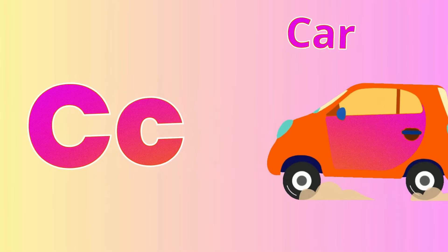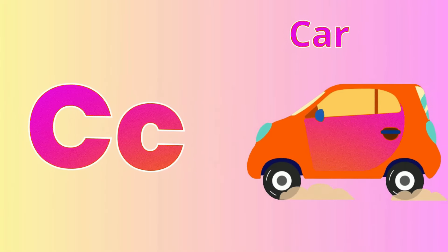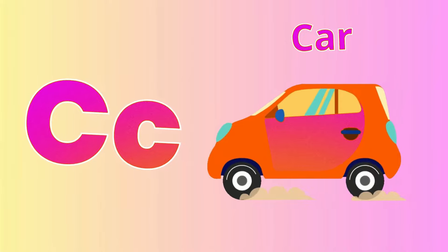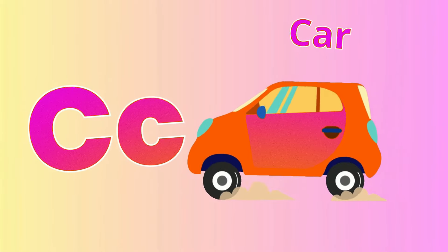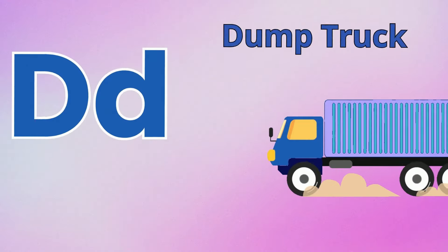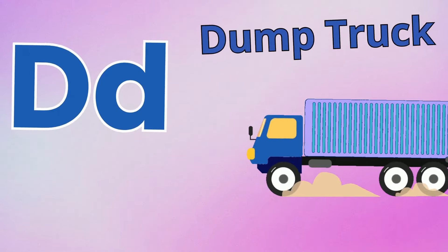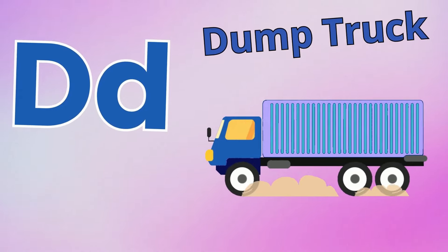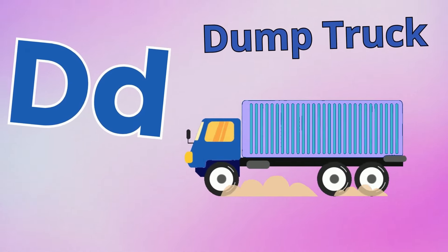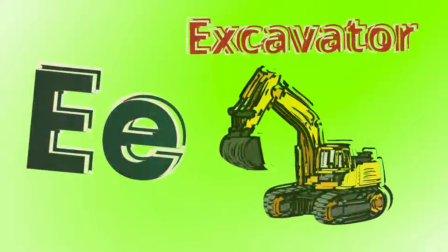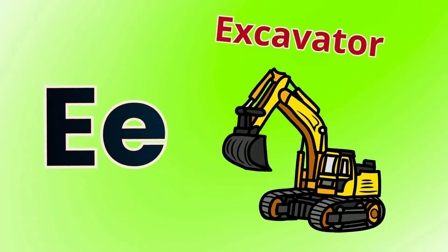C is for car, C-C car, zooming down the road, here it comes, car. D is for dump truck, D-D dump truck, carrying big loads, clank-clank dump truck.